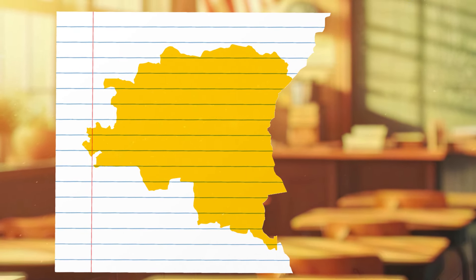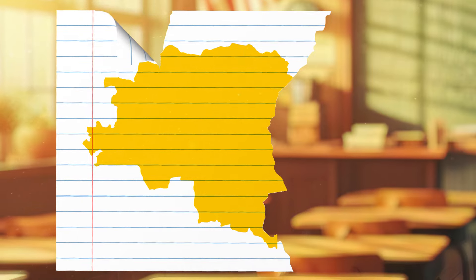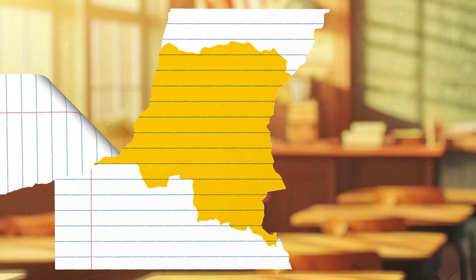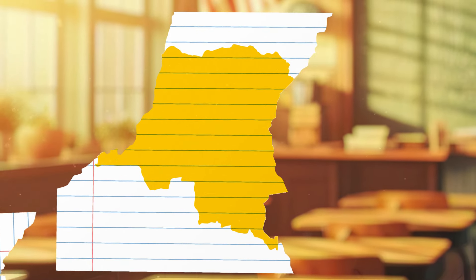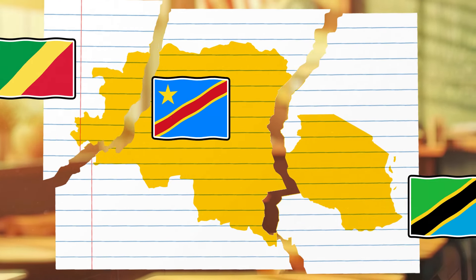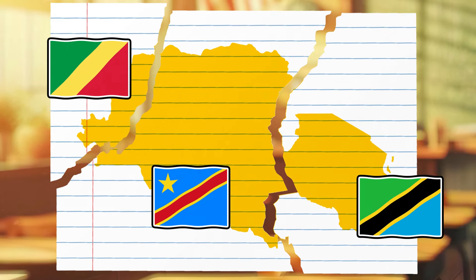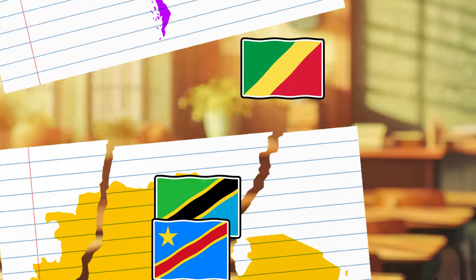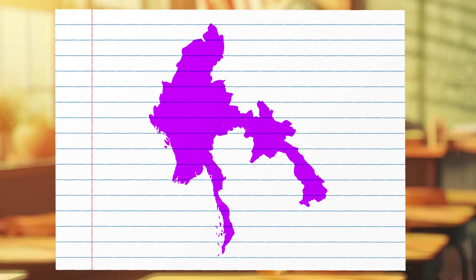These are countries of the central part of the African continent – the Republic of the Congo, the Democratic Republic of the Congo and Tanzania.